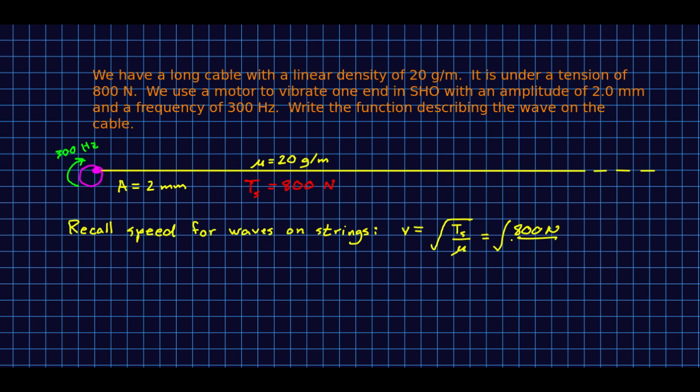So 800 newtons over, careful of units, right? You want to work in kilograms, so that's 0.02 kilograms per meter. If you plug that into a calculator, you'll find that it's 200 meters per second.